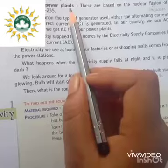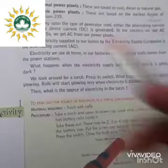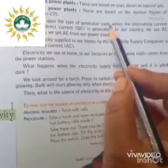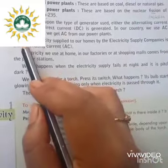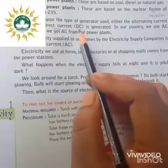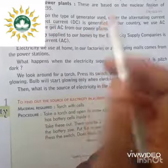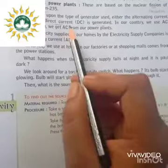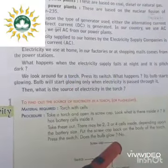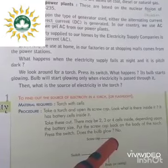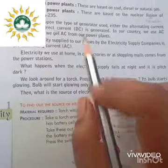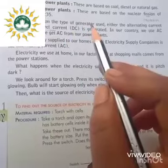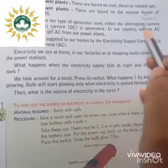Now, depending upon the type of generator used, there are two types of current. One is alternating current, also known as AC, and the other is direct current, known as DC. Alternating current means that the direction of current flowing in a circuit is constantly being reversed back and forth. Whenever the direction of current changes back and forth, that is alternating current, and that is why it is named 'alternating.'